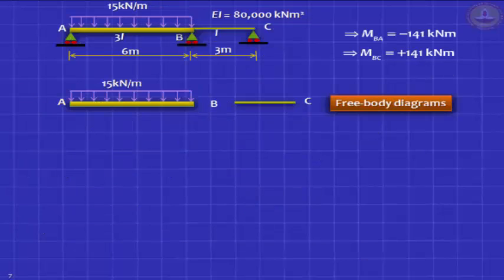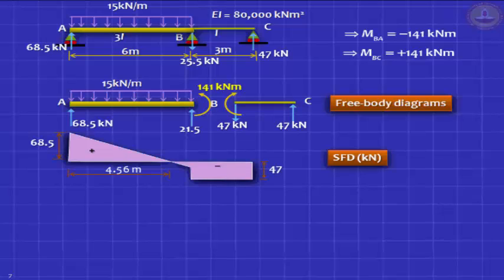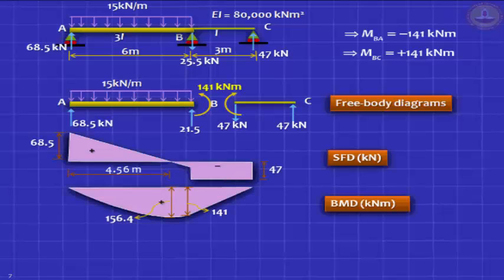Now, you can draw the free body diagrams correctly. Minus 141 kNm plus 141 kNm, find out your shear forces. We have shown you how to do all this in the last class. Find out the reactions if you wish, and draw the shear force diagram, draw the bending moment diagram. You need to find out where the bending moment is maximum. That is where the shear force changes its sign.